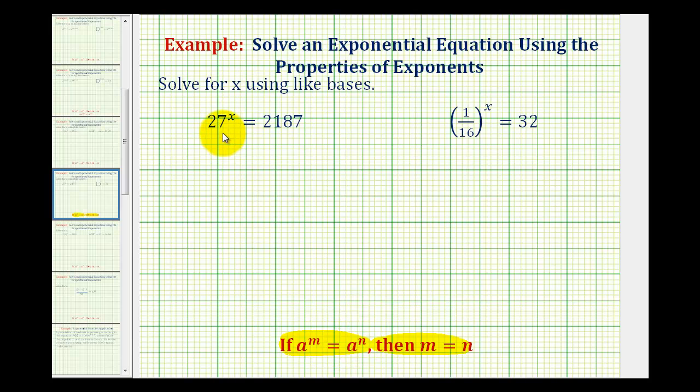So looking at our first example, we have 27 raised to the power of x equals 2,187. Well, we can't write 2,187 with the base of 27. So what we'll have to do is write the left side of the equation using a different base. And to figure out how to do this, it's often helpful to take a look at the prime factorization.